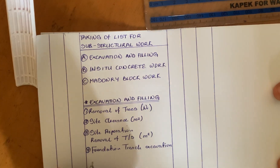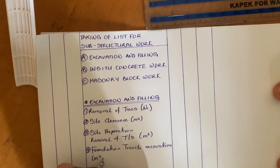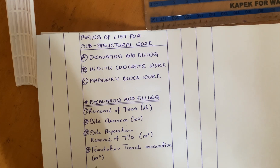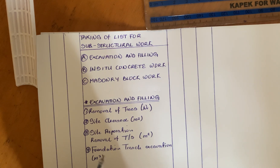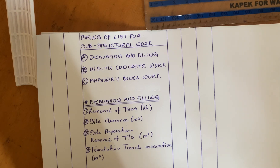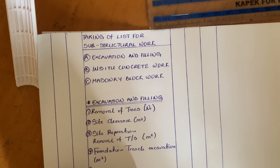The fourth item in excavation and filling would be foundation trench excavation, and it is measured in meters cube. The items we need to book in foundation trench excavation would be the girth of the building, the width of the trench, and the height of the trench.